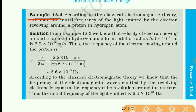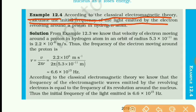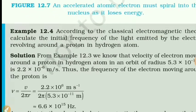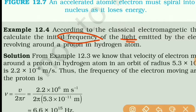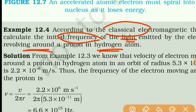Example number 12.4: According to classical electromagnetic theory, calculate the initial frequency of the light emitted by the electron revolving around the proton in a hydrogen atom. We want to find the frequency of the light emitted for a hydrogen atom when the electron is revolving around the proton, considering the classical theory.